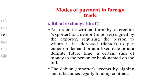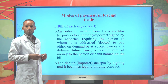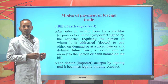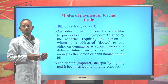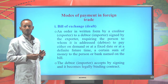The modes of payment in foreign trade: Bill of exchange or draft is an order in written form by a creditor or exporter to a debtor or importer, signed by the exporter, requiring the person to whom it is addressed to pay either on demand or at a fixed or definite future date a certain sum of money to the person or bank named on the bill. The debtor or importer accepts by signing, and it becomes a legally binding contract. Bills may be addressed through banks, but banks will not act on behalf of either the buyer or the seller — they simply serve as an agent.